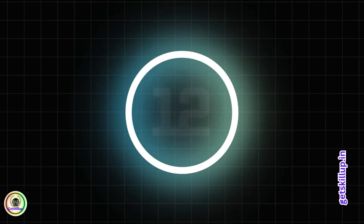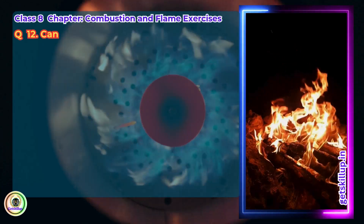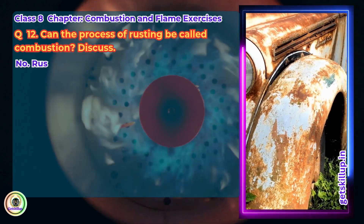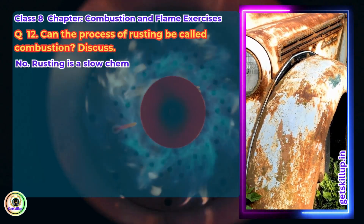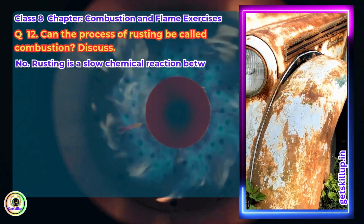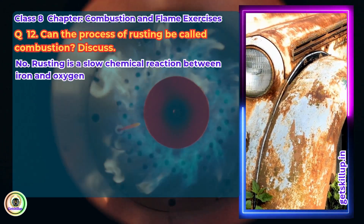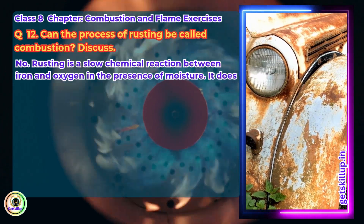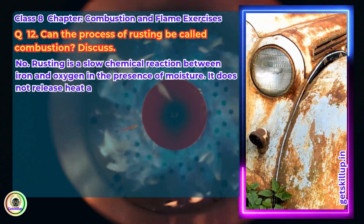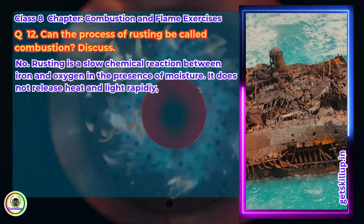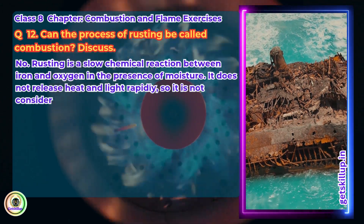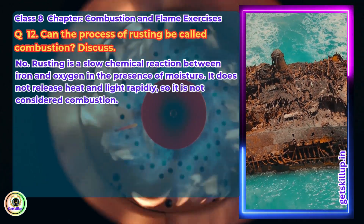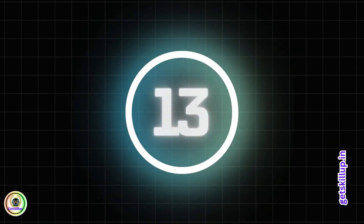Question 12: Can the process of rusting be called combustion? Discuss. Answer: No. Rusting is a slow chemical reaction between iron and oxygen in the presence of moisture. It does not release heat and light rapidly, so it is not considered combustion.